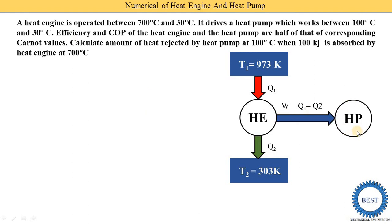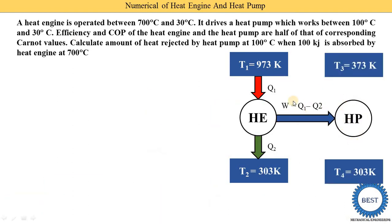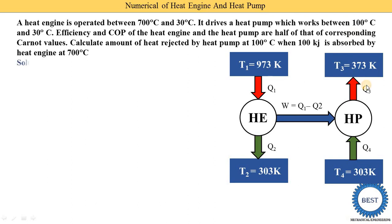Here we draw the heat pump. This heat pump is run using the work done produced by the heat engine, operating between 373 Kelvin (100°C) and 303 Kelvin (30°C). The heat pump absorbs Q4 from the sink and supplies Q3 to the source. The efficiency and COP of the heat engine and heat pump are half of the corresponding Carnot values.